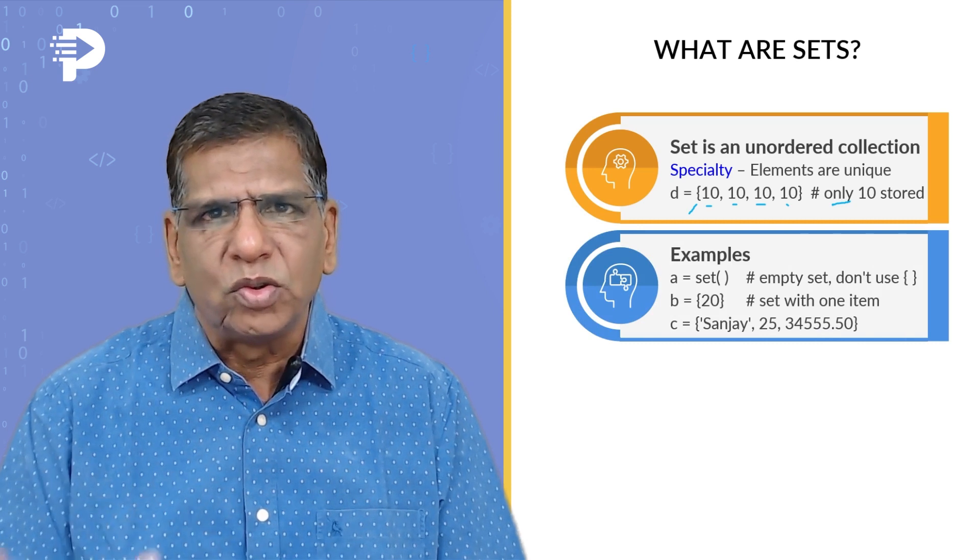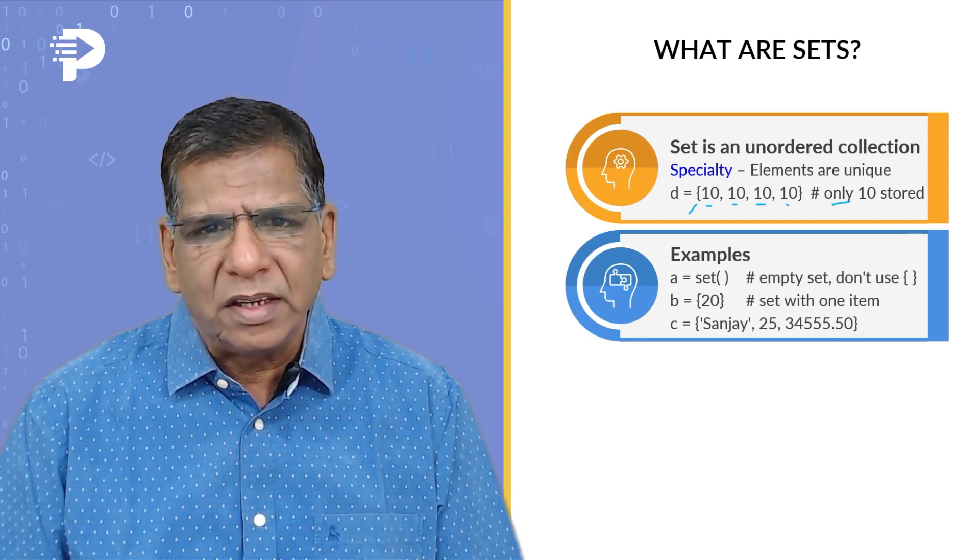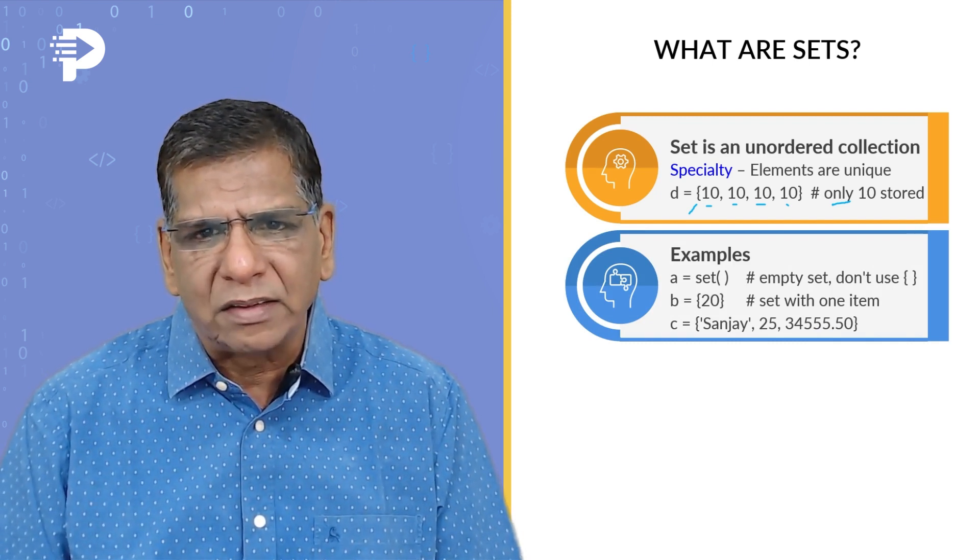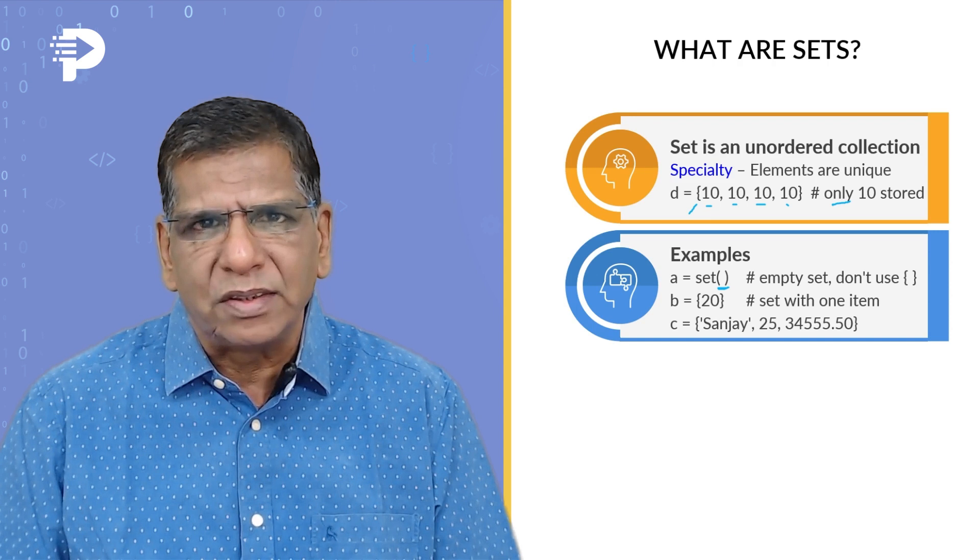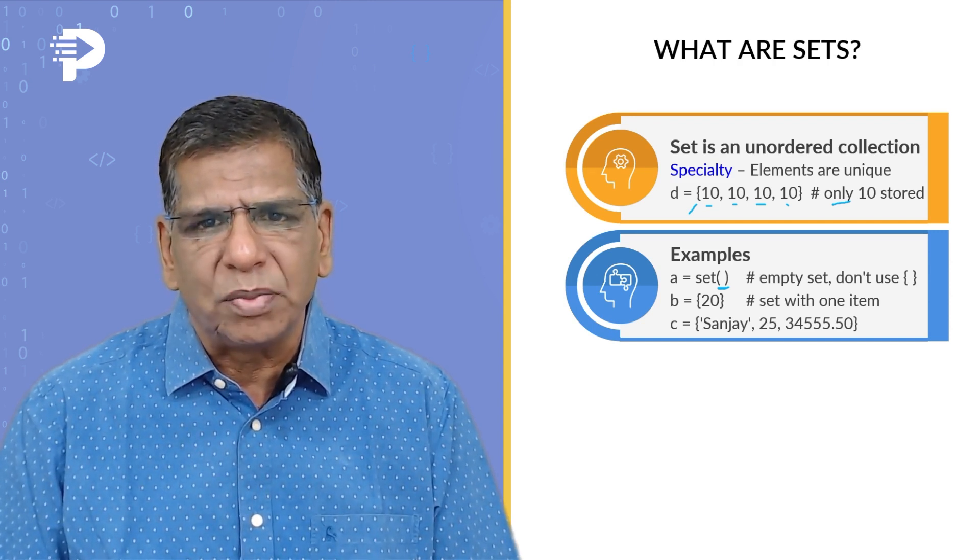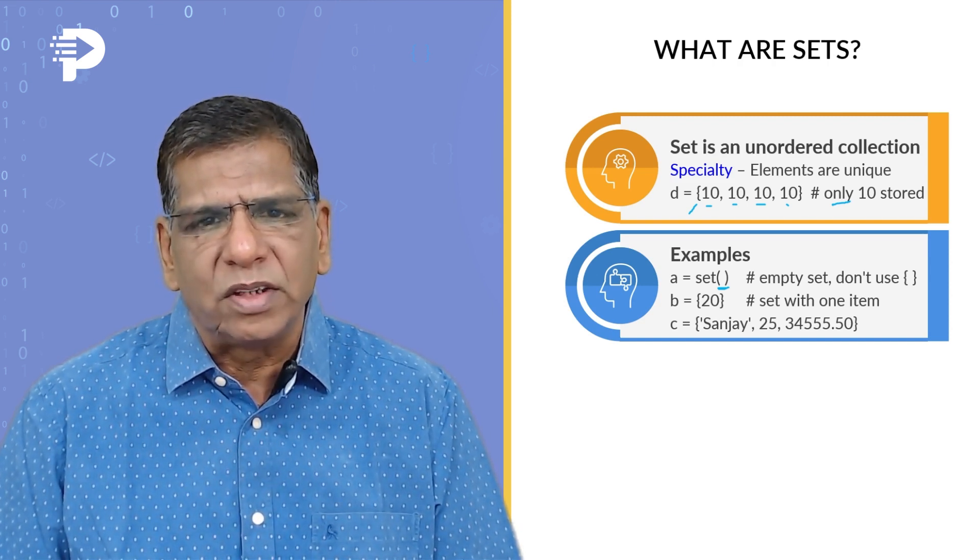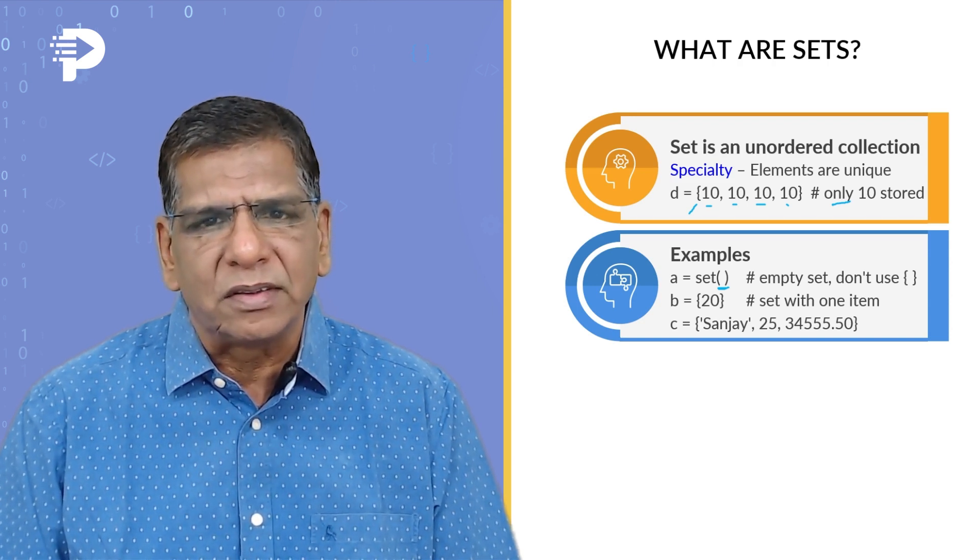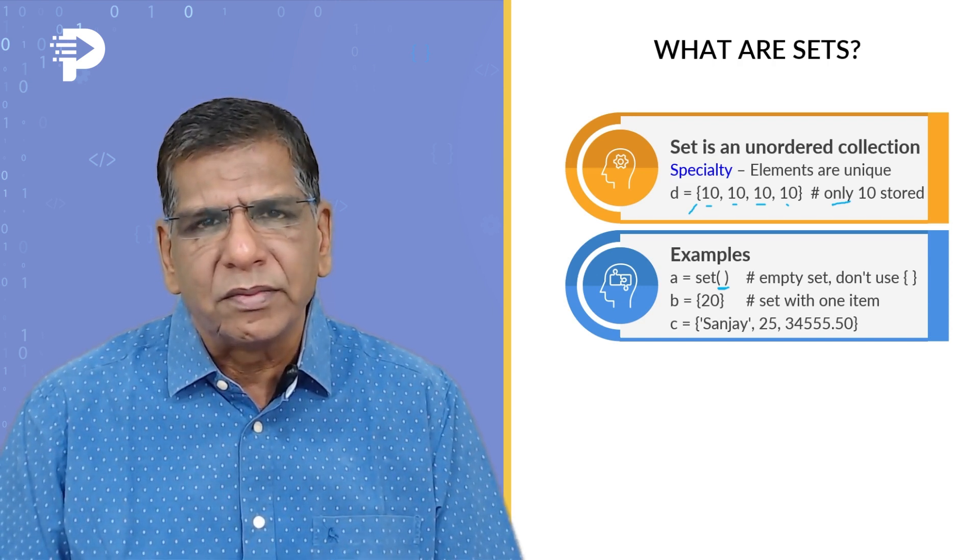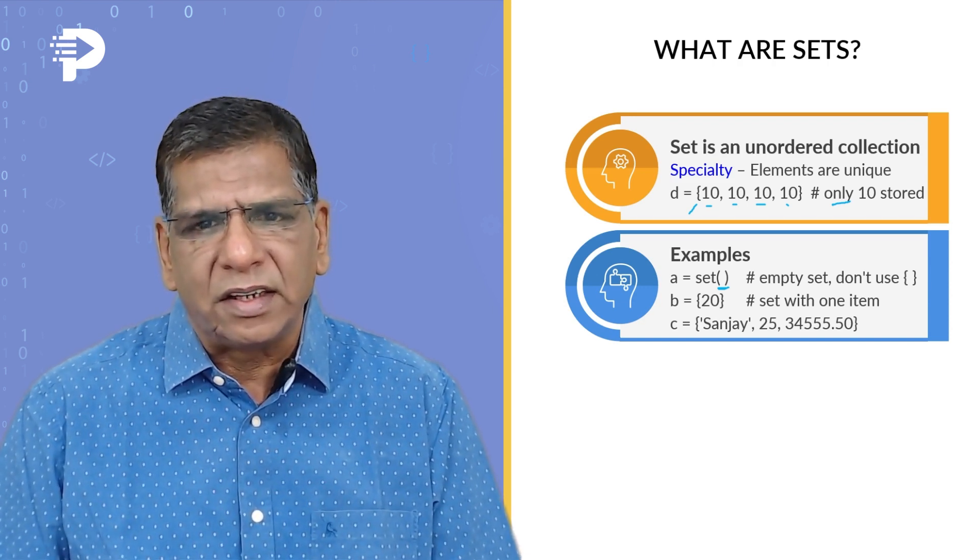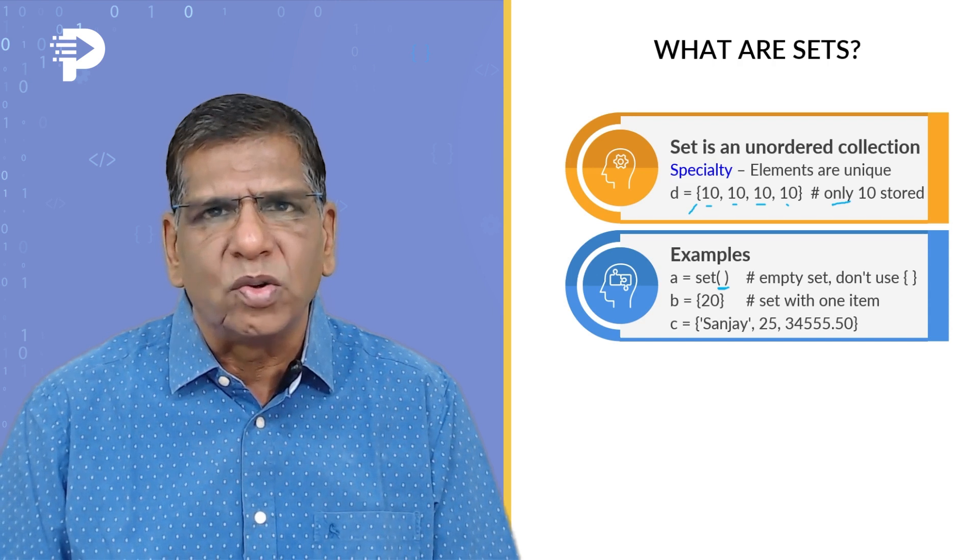If I am to show you some examples of sets, then well, an empty set can be created by saying set followed by empty pair of parentheses and not braces. Normally with a set you associate a pair of braces, but when you are creating empty set you have to use a pair of parentheses. If one element is to be stored in a set, then I have to just say the element within a pair of braces. I do not need a comma here the way I needed it in case of a tuple. And realize that a set can contain dissimilar elements: name, age, salary, all dissimilar, they can also go into a set.